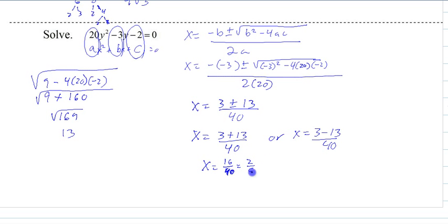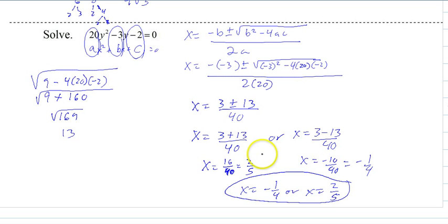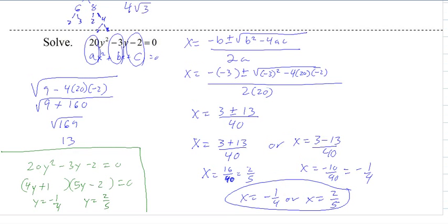So that would be 2 over 5. And then x equals negative 10 over 40, which is negative 1 4th. So we get x equals negative 1 4th, or x equals 2 5ths. And those are your answers. So if you can simplify it, you should. What this means is that this is actually factorable. And there's the factored form of it. So you could also have factored this instead.